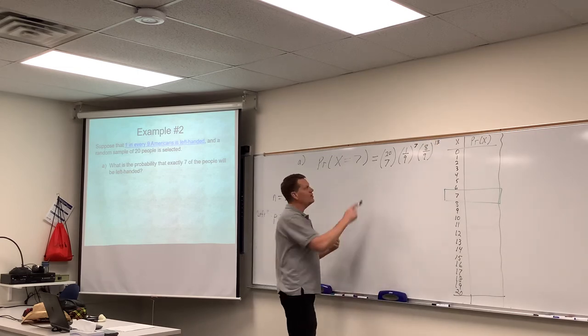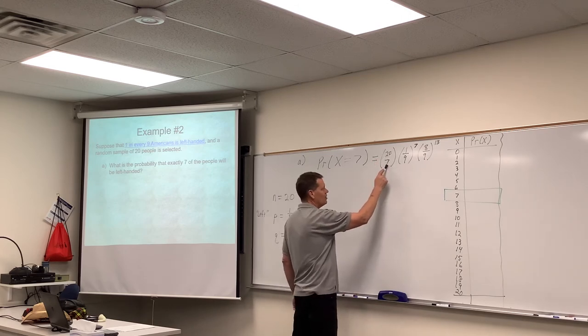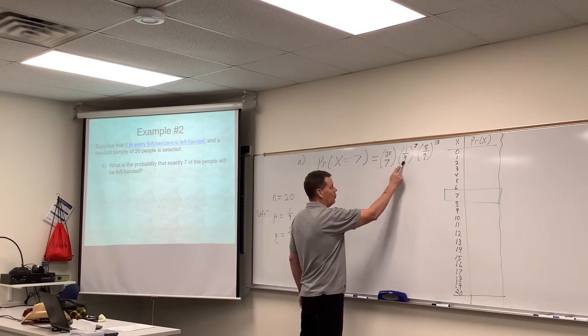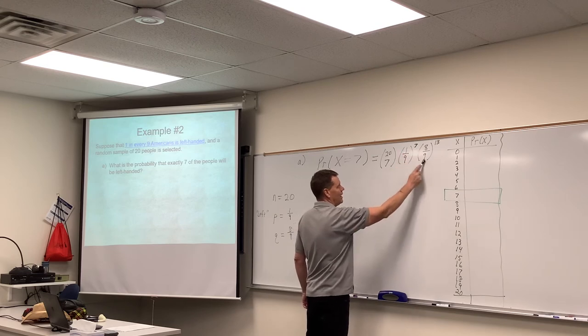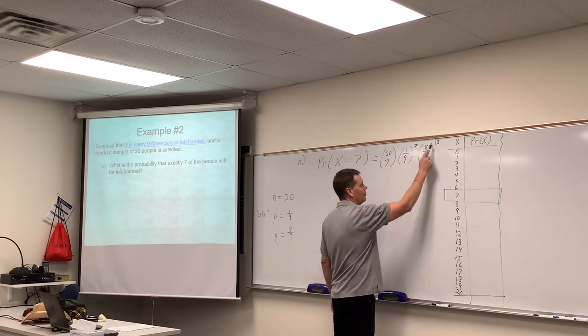So I'll say it again. This is the combination of 20 people choose seven to be left-handed. Left-handed, one-ninth to the seventh power. Right-handed, which is eight-ninths to the 13th power.